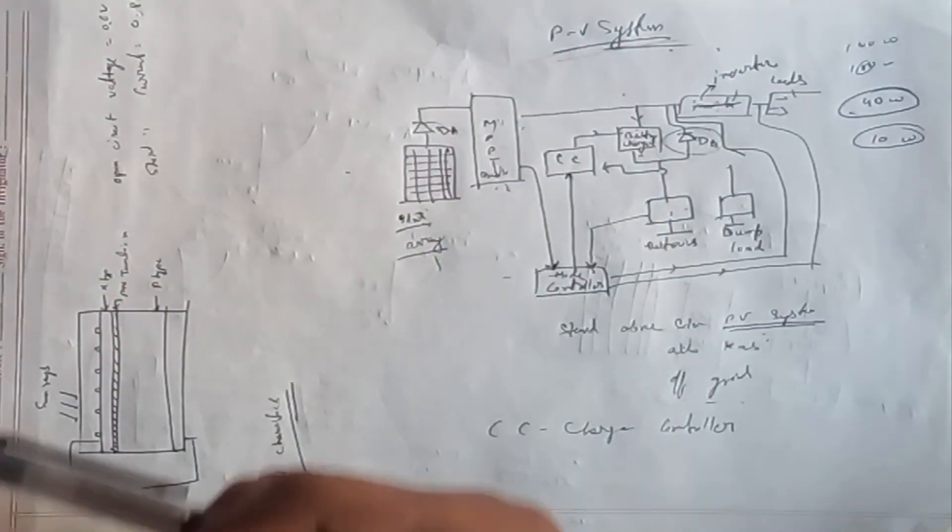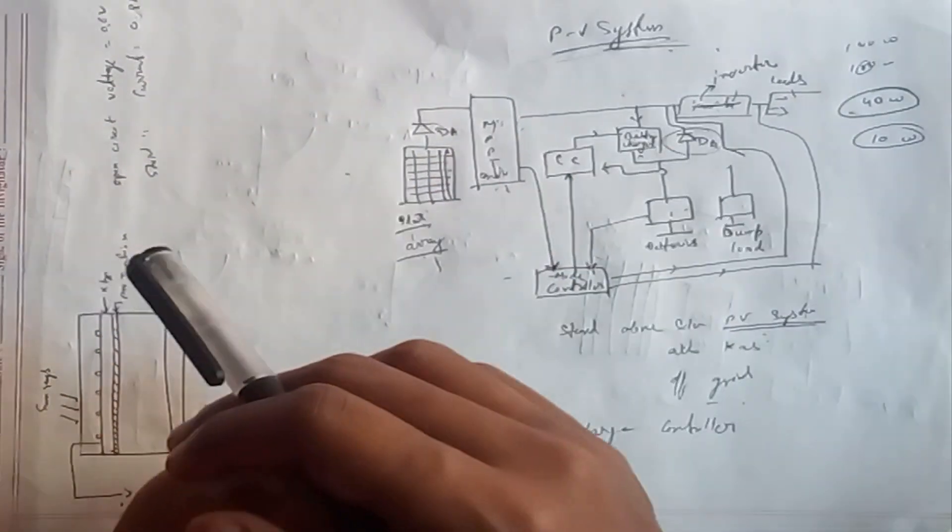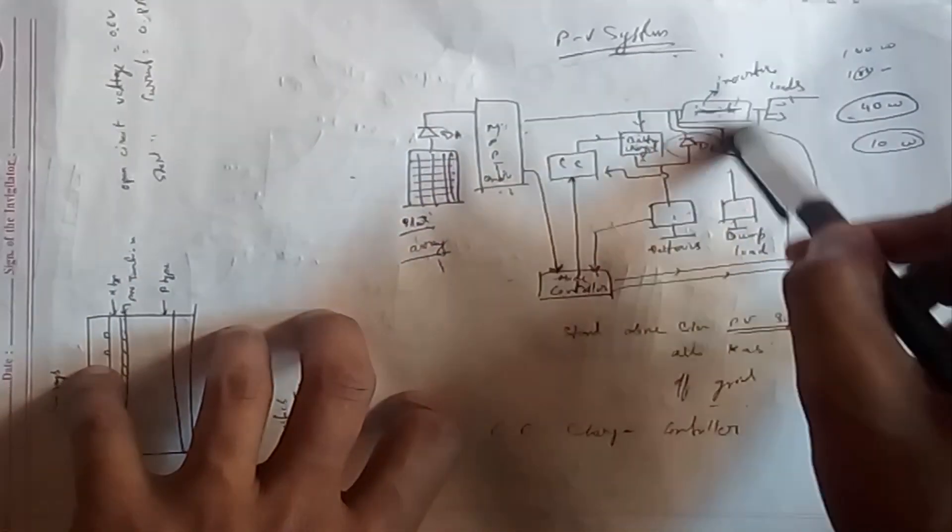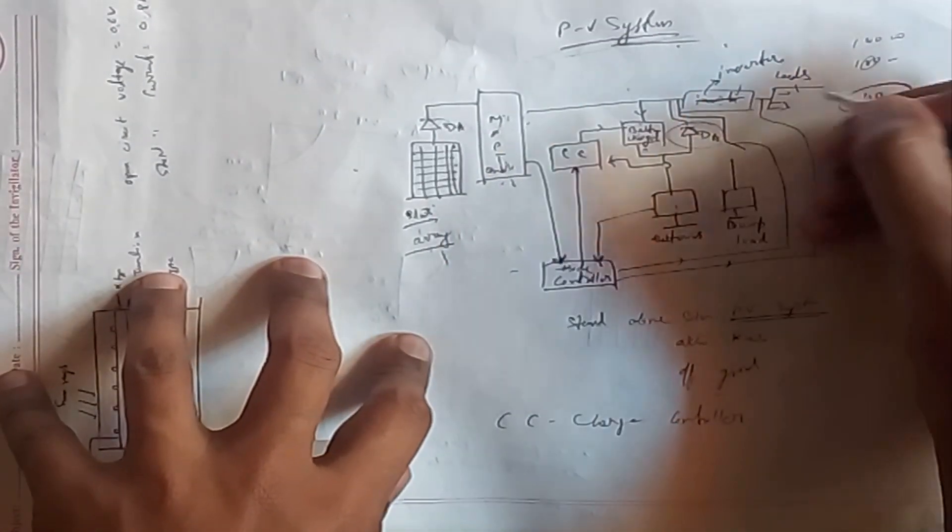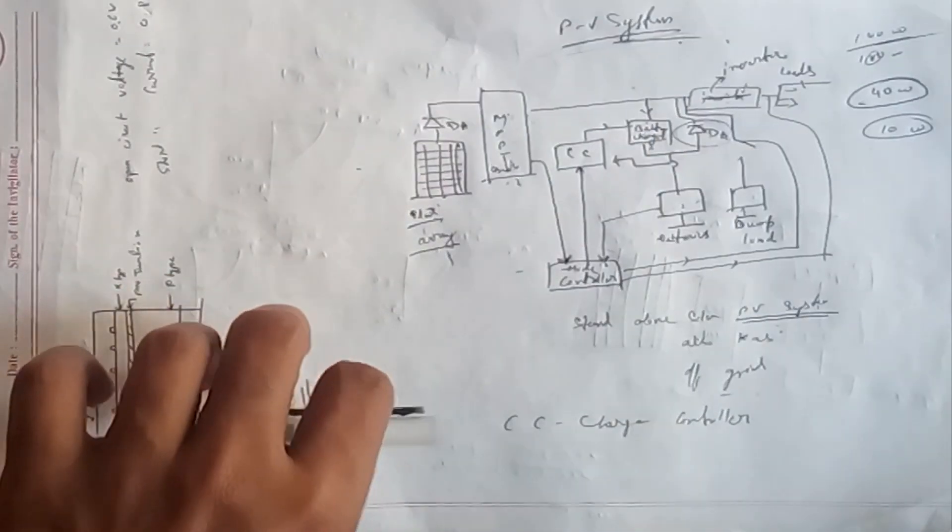The inverter feeds power to the loads. Your load already got the current from DC to AC converter and the load got the current. But suppose your home needs a hundred watts, but this whole solar thing gives you 150 watts.